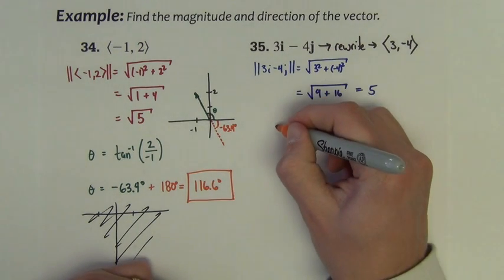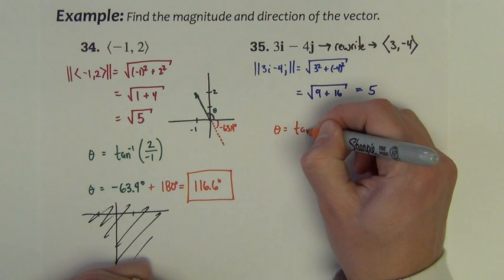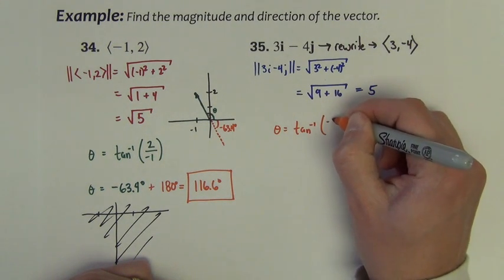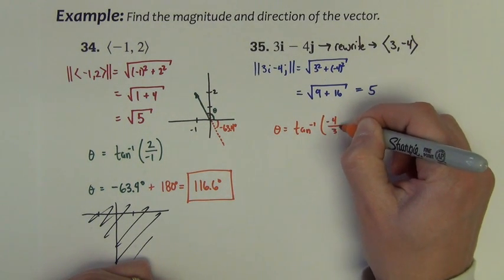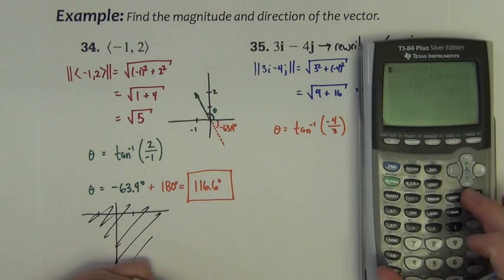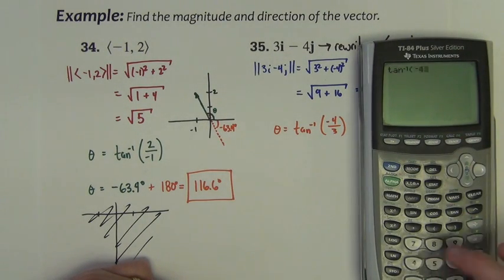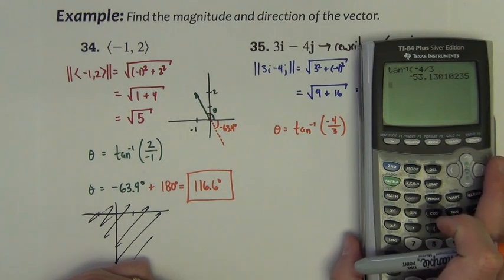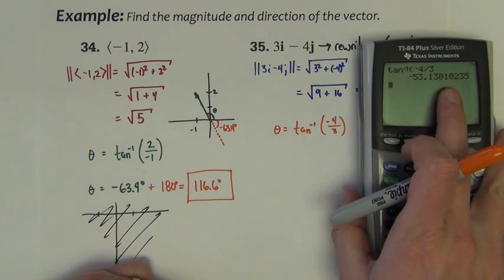Now the direction angle, theta. So we want tan inverse of the y over the x, the b over the a. So we want tan inverse, -4 divided by 3. We get -53.1.